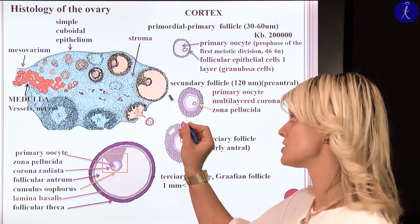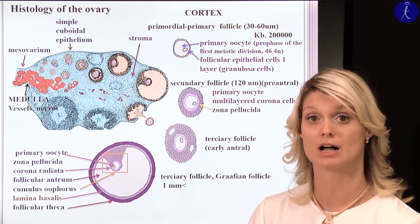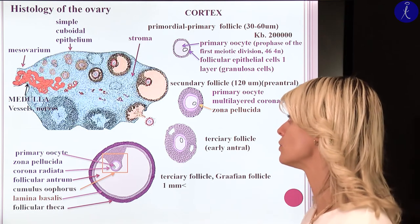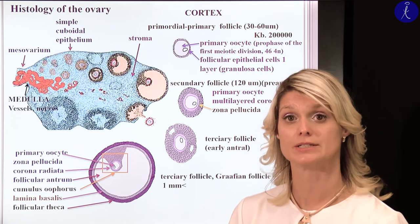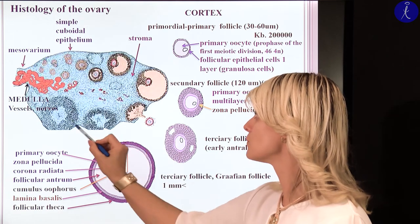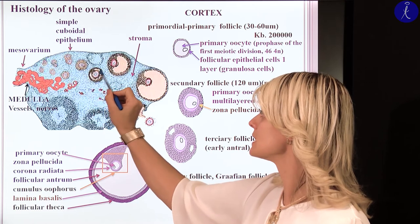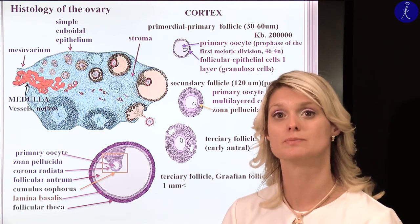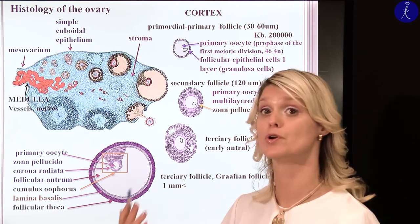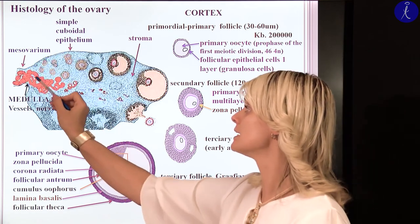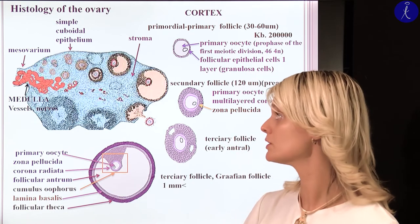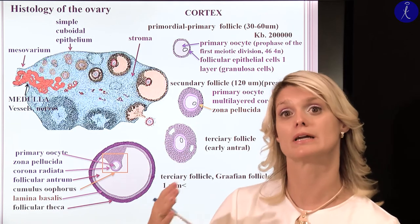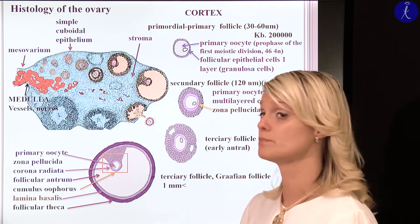Here you can see the schematic picture of the ovary, where we can follow the development of the follicles from the beginning until the major form of the follicle. We can divide the ovary into two main parts. The outermost part is called the cortex, where we can see the different stages of the developing follicles. In the middle, this part is called the medulla, where we have the vessels and nerve cross-sections which supply the organ. The double layer of the peritoneum called the mesovarium is also shown. This part of the ovary will be free and not covered by the peritoneum, and ovulation will occur on that surface.